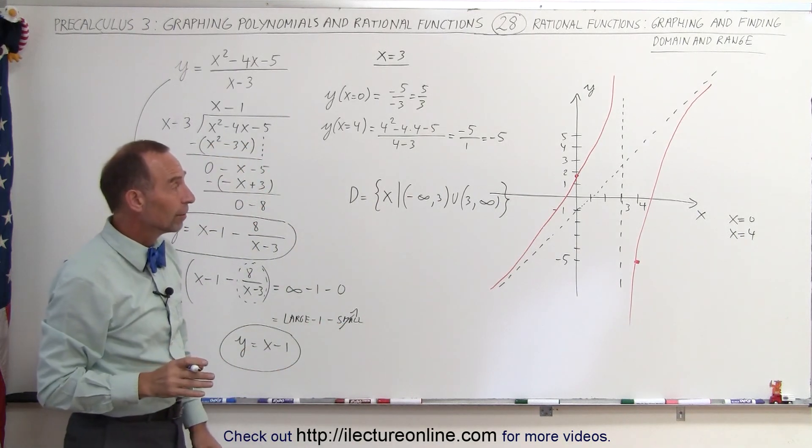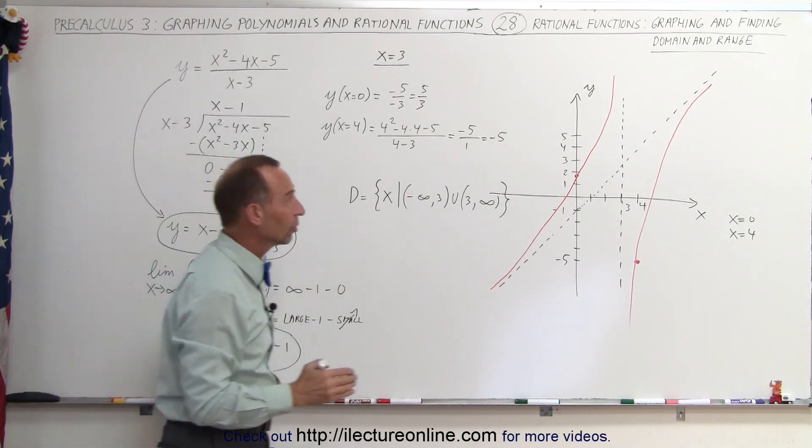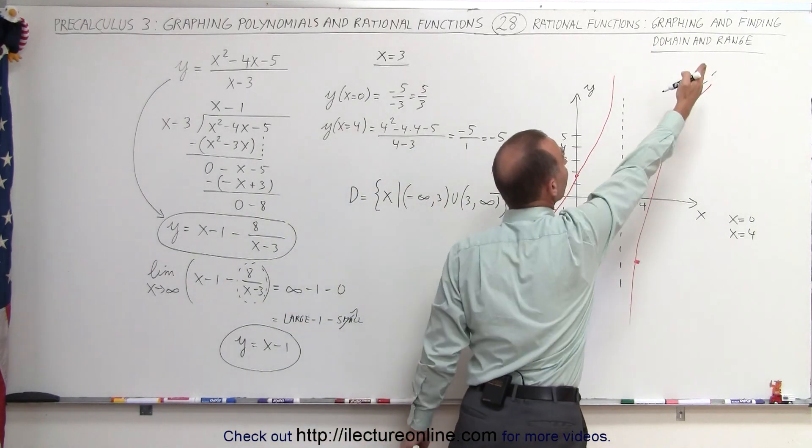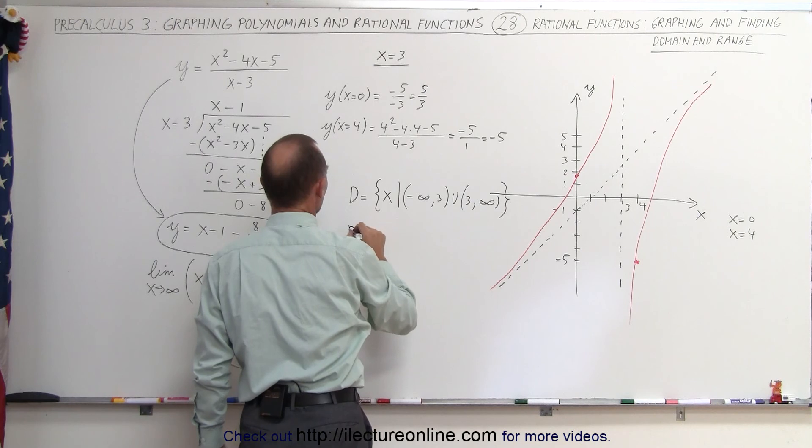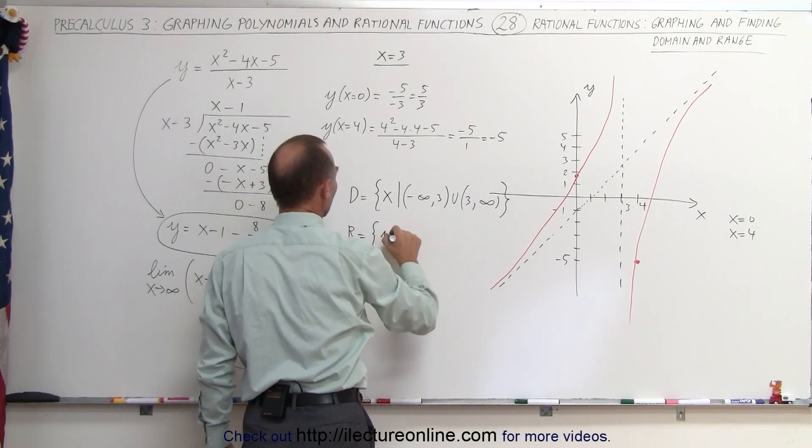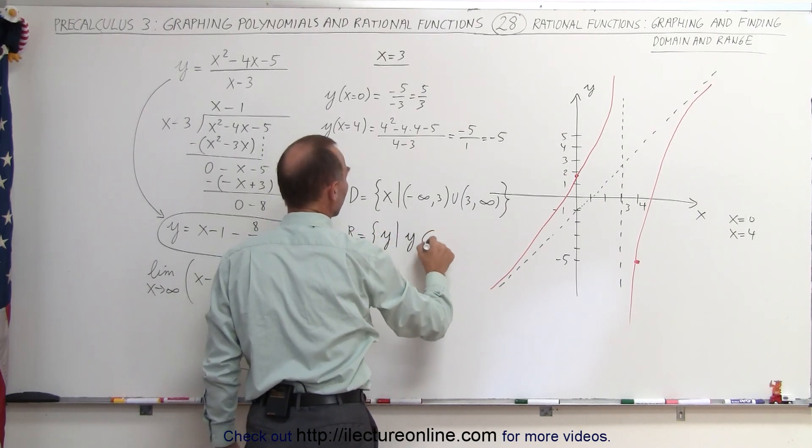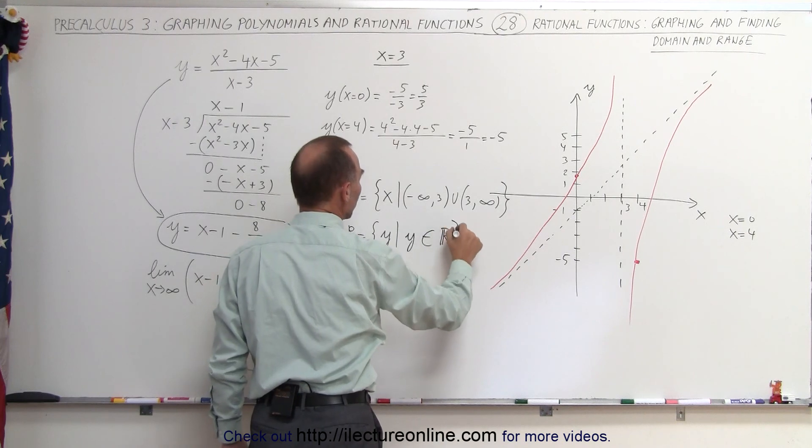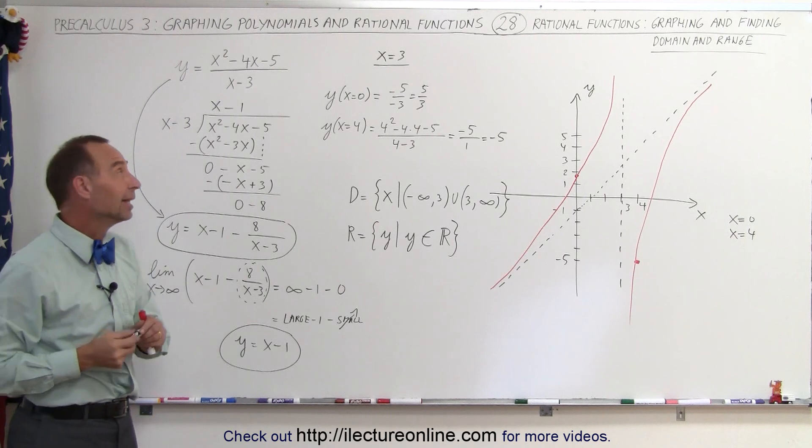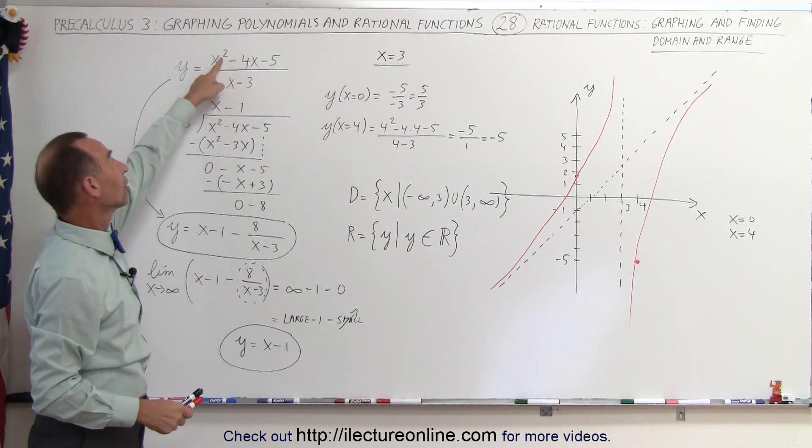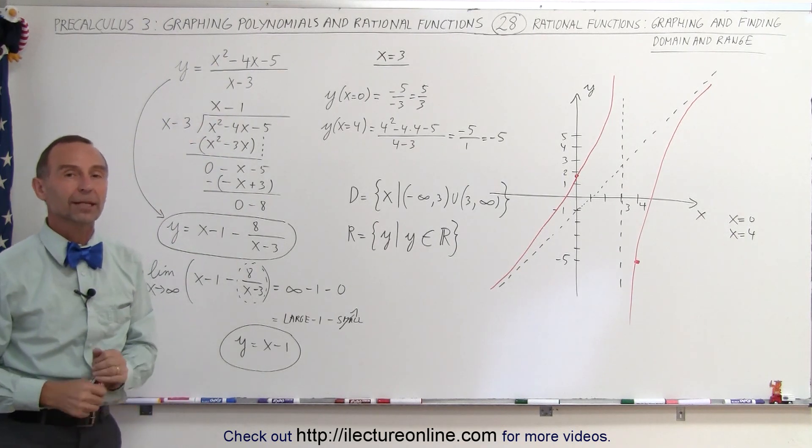The range: is the range limited at all? It doesn't look like it. You can see that it goes to positive infinity in one direction, negative infinity in the other direction, which means that the range is equal to all y's such that y is an element of the real number system. And that's how we do that in the case where the numerator has a larger exponent than the denominator.